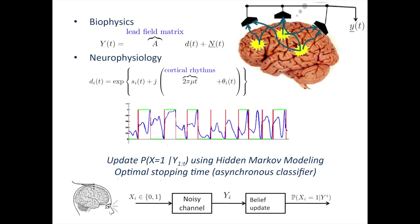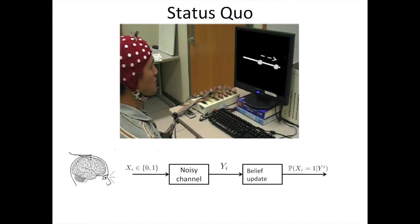We developed a basic statistical model exploiting the known topographic structure — when you imagine left, certain dipoles are active compared to when you imagine right. We integrated this into a statistical framework and developed an asynchronous classifier using principles of optimal stopping time. We were able to decode about 80 reliable bits per minute — in 2010 this was the fastest known approach.